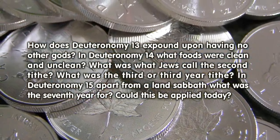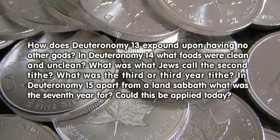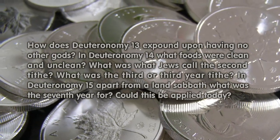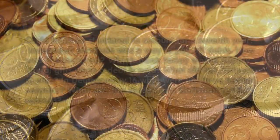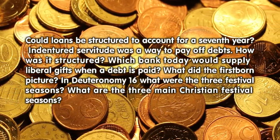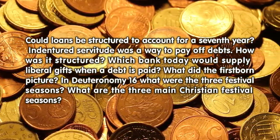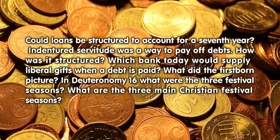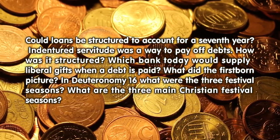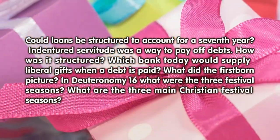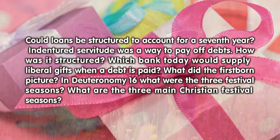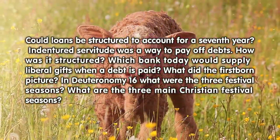In Deuteronomy 15, apart from a land Sabbath, what was the seventh year for? Could this be applied today? Could loans be structured to account for a seventh year? Indentured servitude was a way to pay off debts — how was it structured? Which bank today would supply liberal gifts when a debt is paid? What did the firstborn picture?